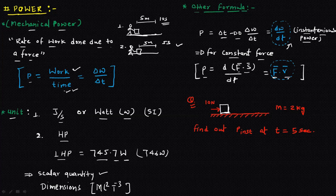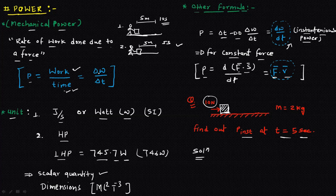Now let's do a question. A block of mass 2 kg is being displaced by a force of 10 newtons. We need to find the instantaneous power at t = 5 seconds. We cannot use P = ΔW / ΔT because that gives average power. That formula would apply only if they asked for the average power over 0 to 5 seconds.